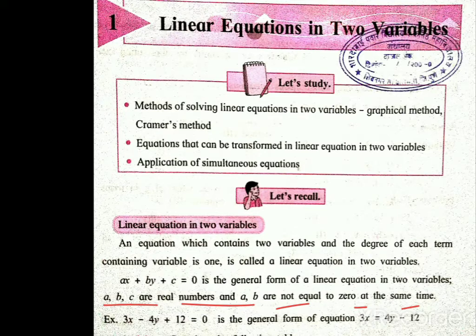Manje, a kiwa b chi value ekas vadi zero na ko ahe. Jar a chi value zero zhali, tar magh x chi term chi ahe ti zero ho un zail. Manje, he linear equation in one variable hoil.